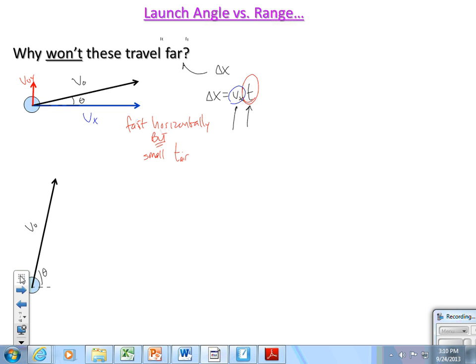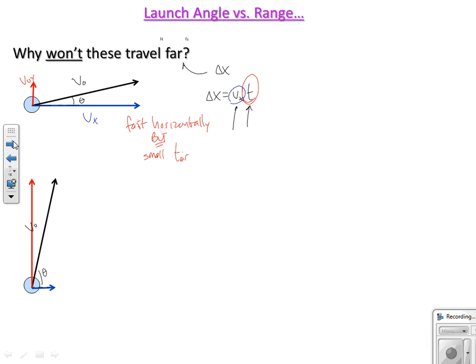If we look at the next one down, this one is shot at a relatively large launch angle. It spends a big time in the air, but it has a slow v_x. It's in the air a while, but it goes really slowly sideways while it's in the air. Those two won't go as far as something else might go.